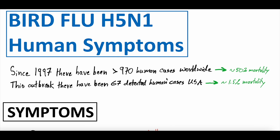Just a brief bit of background that's pertinent to the human symptoms. Since 1997, there have been over 970 human cases worldwide of bird flu H5N1. So this is not a new disease — it's been around for close to three decades that we've been identifying it, and it's infected almost 1,000 humans worldwide. Traditionally, the mortality rate is almost 50%. About half of people who have traditionally gotten this disease, unfortunately, have died.